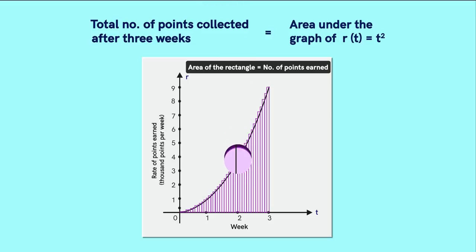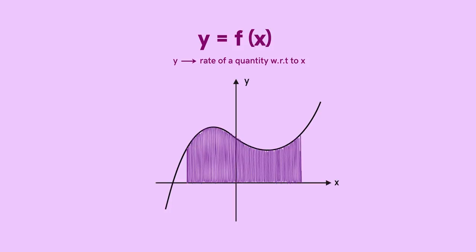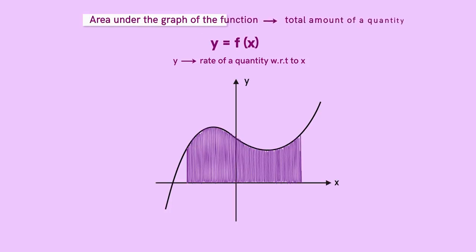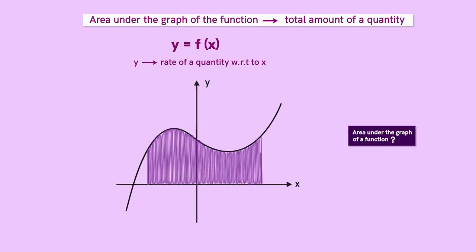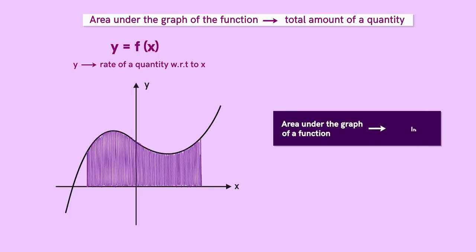In abstract terms, we can say that if we have a function which represents the rate of some quantity, then the area under the graph of that function tells us the total amount of that quantity. Now we need to know how to find the area under the graph of a function. Integration is the process used to find this area. And this area is called the integral of the function.